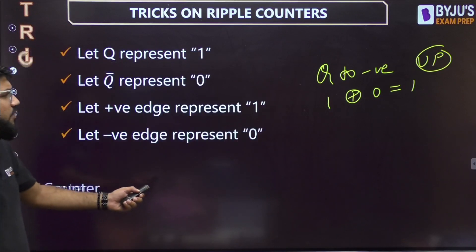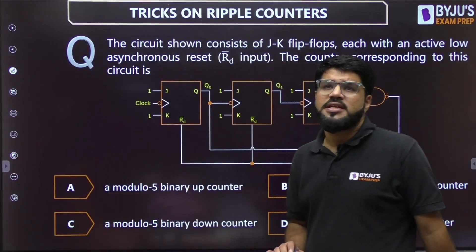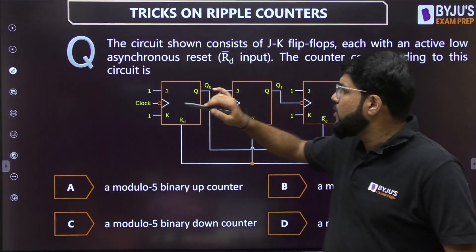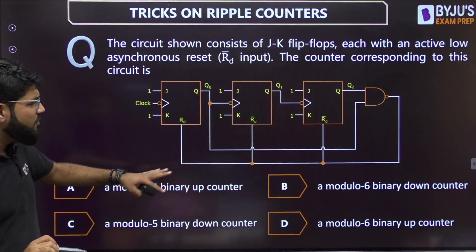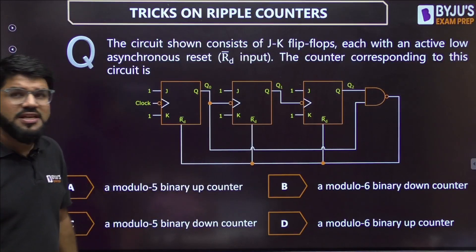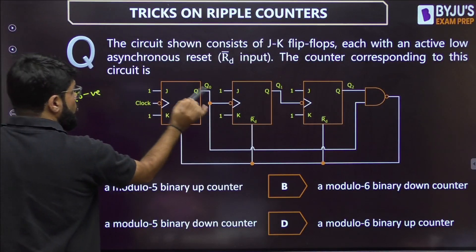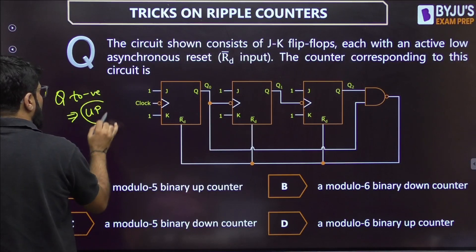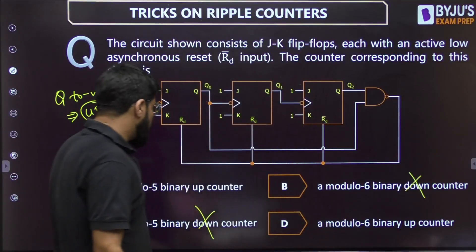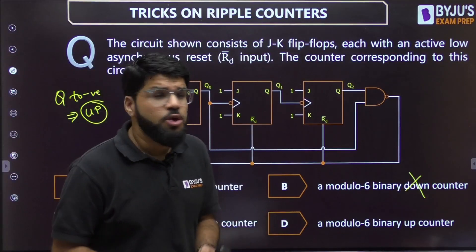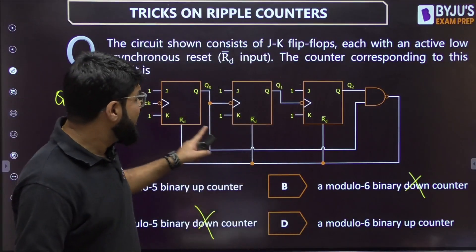Now let us take another commonly expected question type from ripple counters. Questions are often mixed with the concept of a reset or preset pin, which is mostly asynchronous but can also be synchronous. The circuit consists of JK flip-flops with an active low asynchronous reset pin. The question asks: is the counter modulo 5 up, modulo 6 down, modulo 5 down, or modulo 6 up? First, look at the connection — it is Q to negative edge, so it is an up counter.